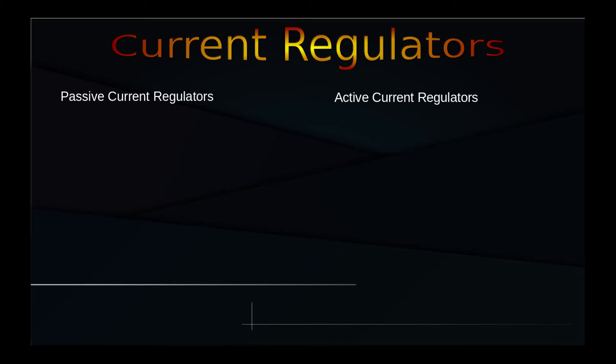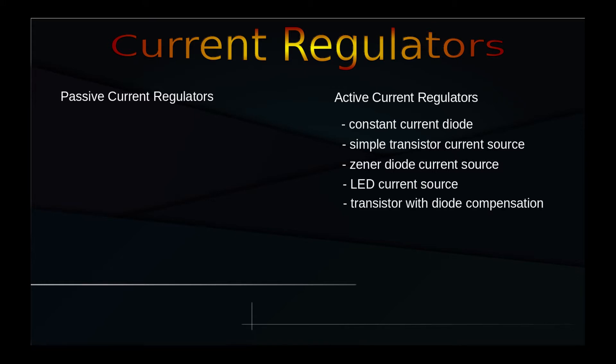Active current regulators can also be classified as constant current diodes, simple transistor current sources, zener diode current sources, LED current sources, transistors with diode compensation, current source with thermal compensation, op amp current source, and voltage regulator current sources. This classification is by no means complete, but it should be enough to understand the basic principles of current generators design.